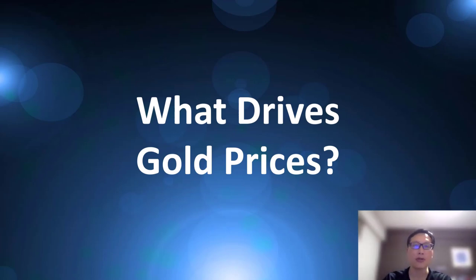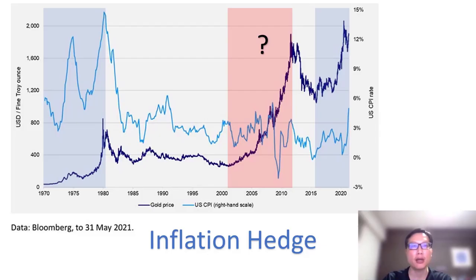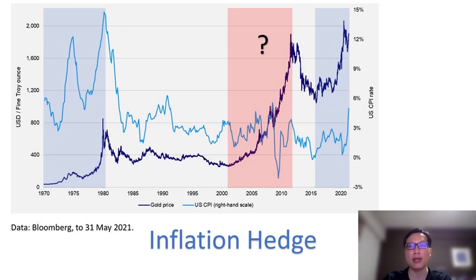Now let's examine what drives gold prices. Gold tends to do well during inflationary periods, which is evident from the shaded areas in blue — those are the periods when the US consumer price index was increasing. However, it doesn't explain why gold prices increased drastically during the period shaded in red. During that period, inflation was not really an issue, but gold went up multiple folds. To explain this, we need to look at the next driver of gold.